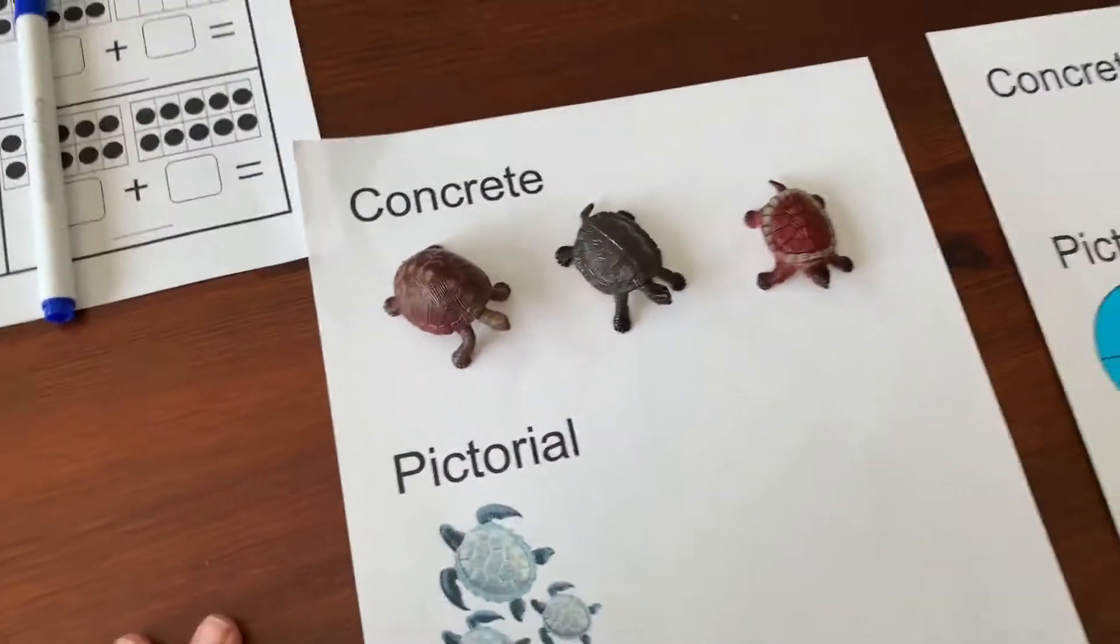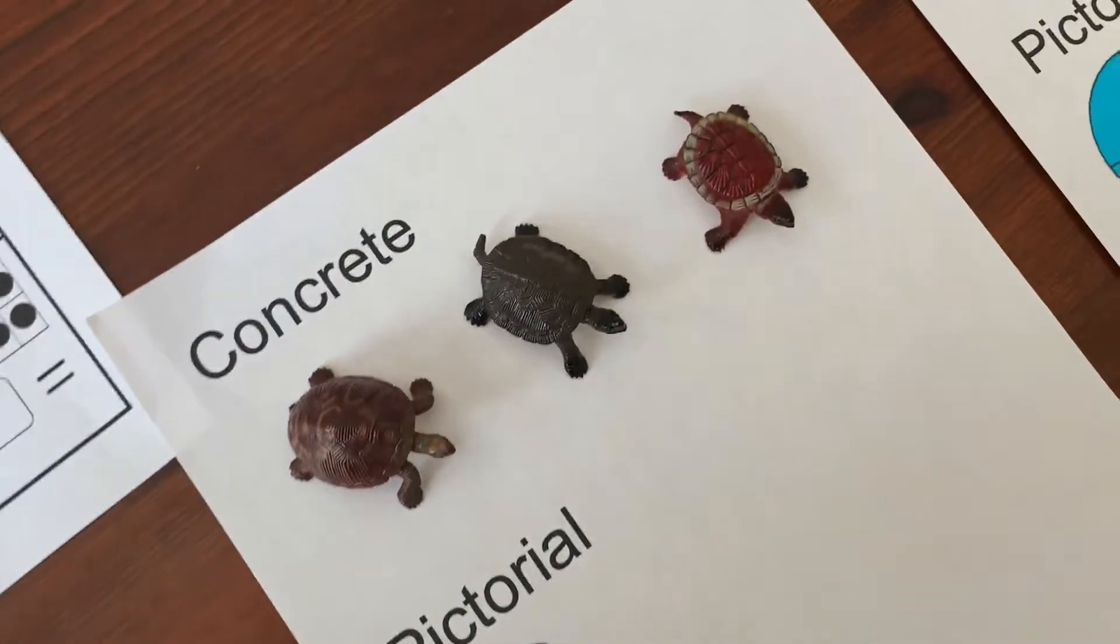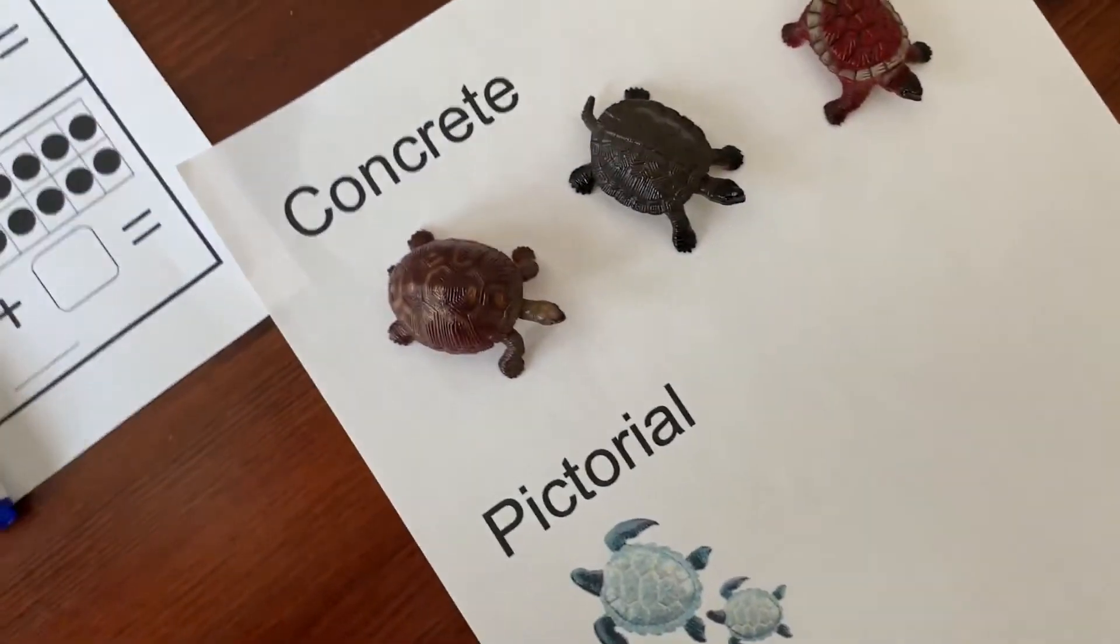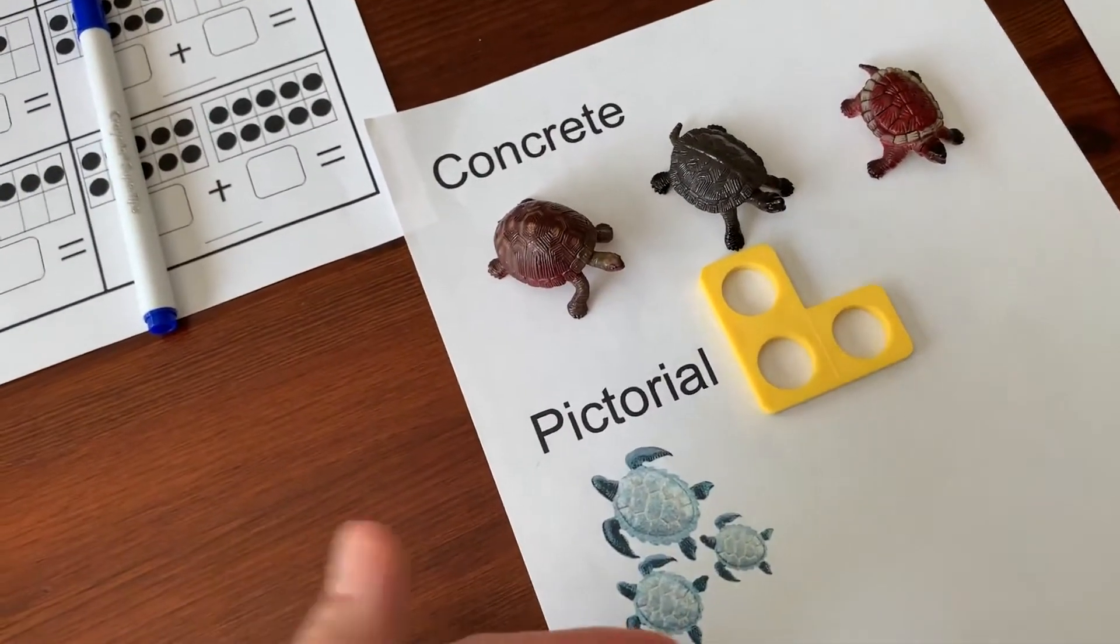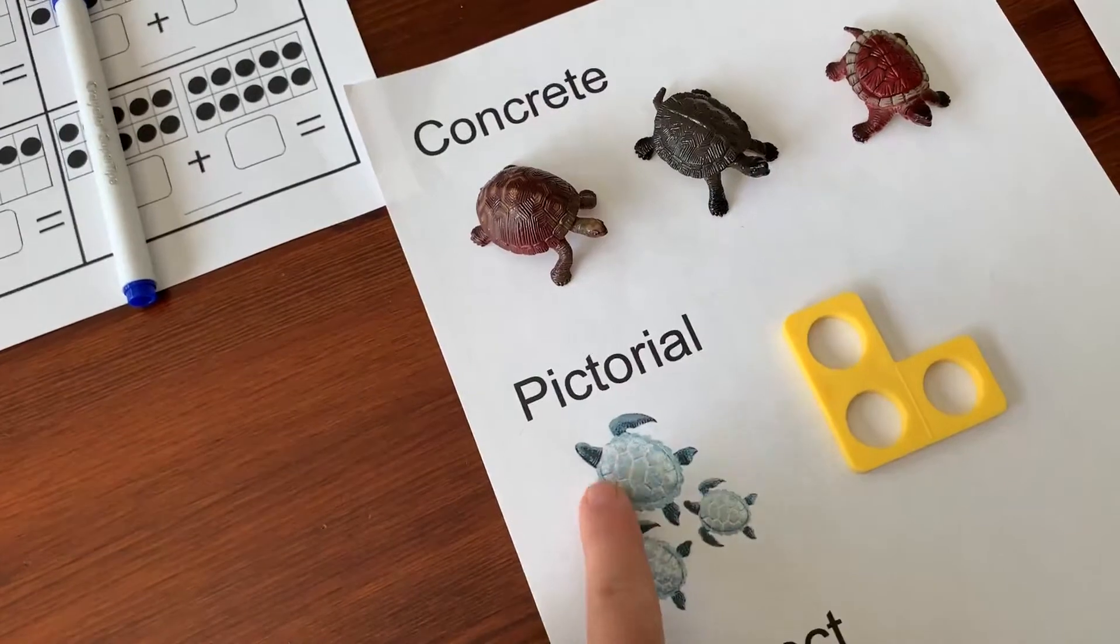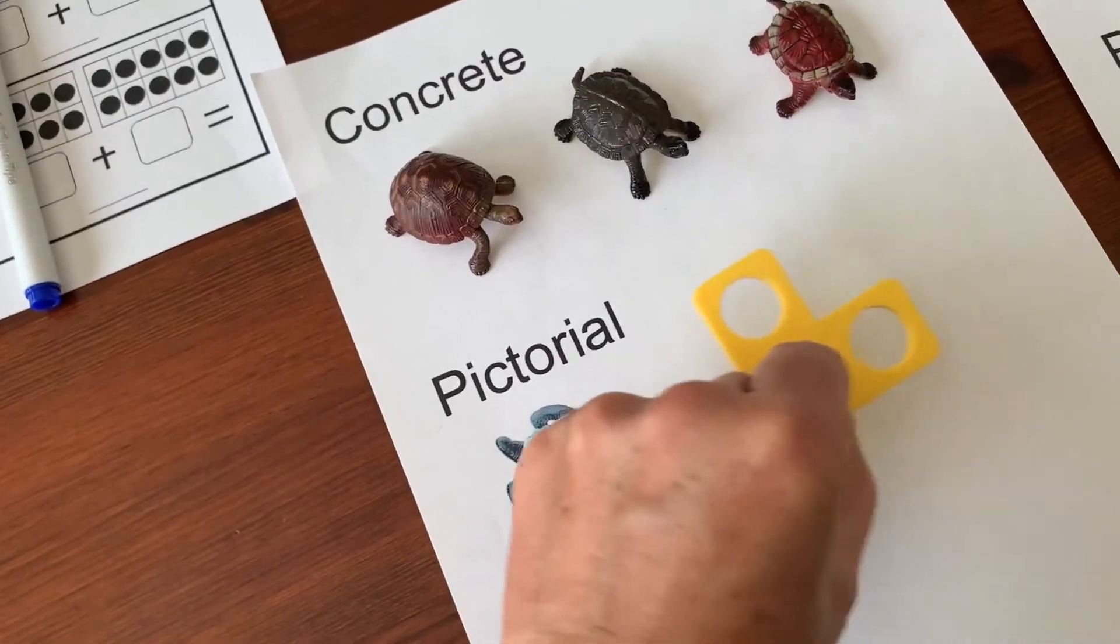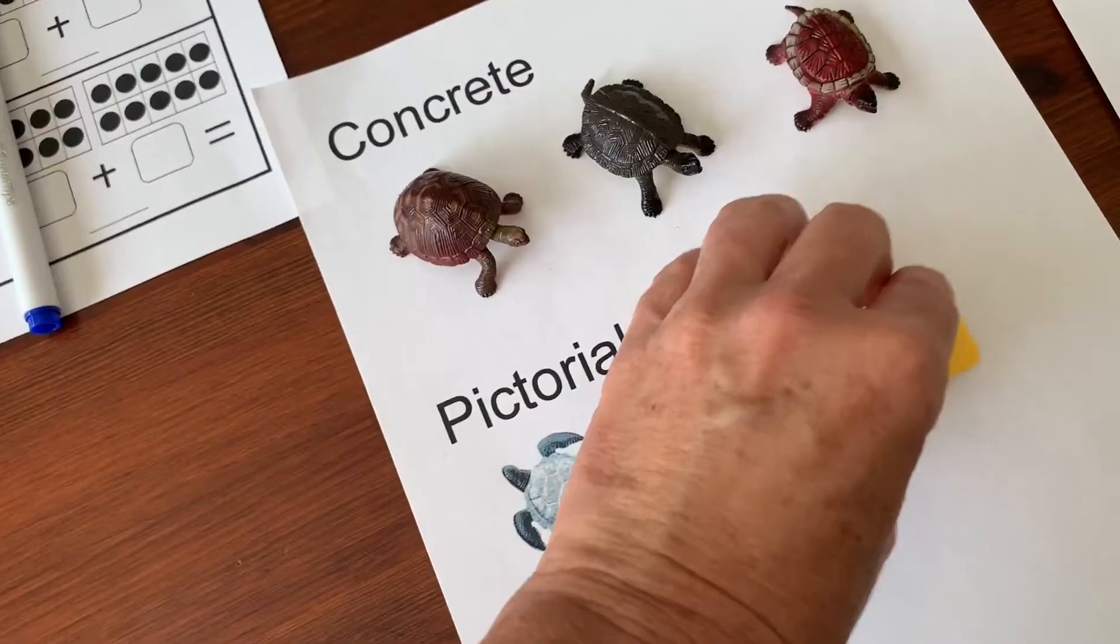The concrete might eventually become something that's in between concrete and pictorial, like a Numicon. That's a three. They'd see a picture of three turtles and they'd have a three like this. It's not three turtles, but it's a three that they can get their hands on.